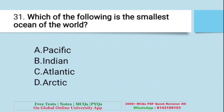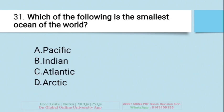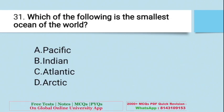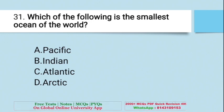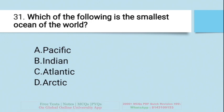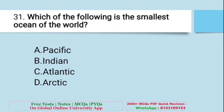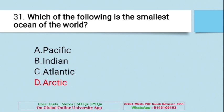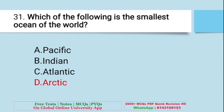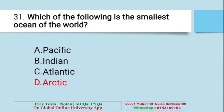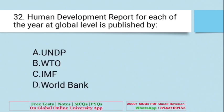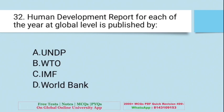Question: Which of the following is the smallest ocean in the world? A. Pacific, B. Indian, C. Atlantic, D. Arctic. The right answer is D — Arctic Ocean is considered the world's smallest ocean.